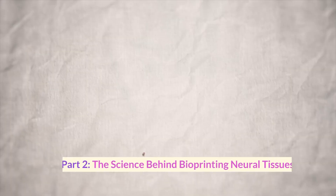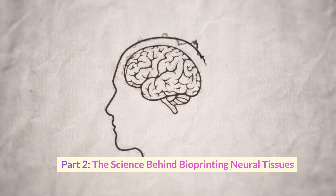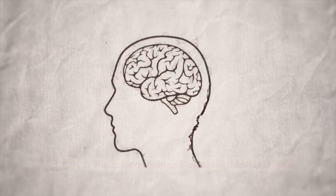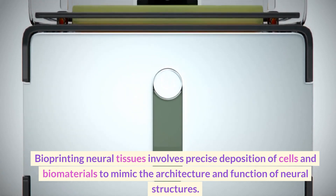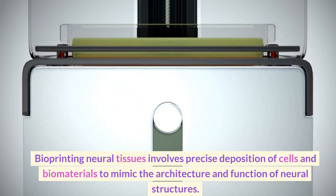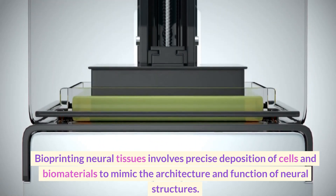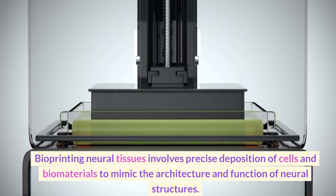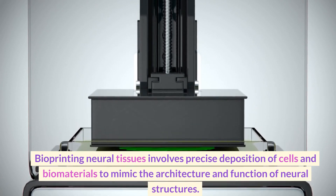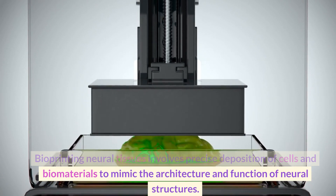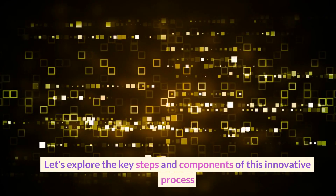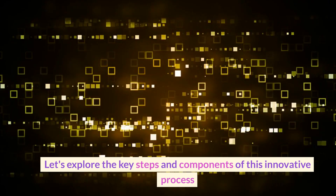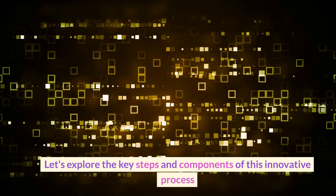Part 2: The Science Behind Bioprinting Neural Tissues. Bioprinting neural tissues involves precise deposition of cells and biomaterials to mimic the architecture and function of neural structures. Let's explore the key steps and components of this innovative process.